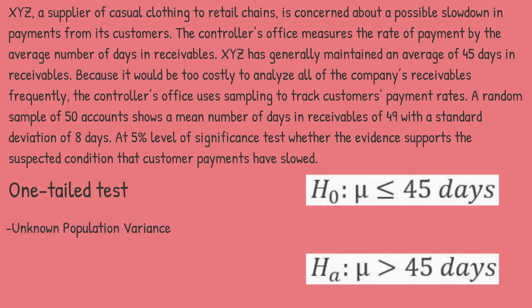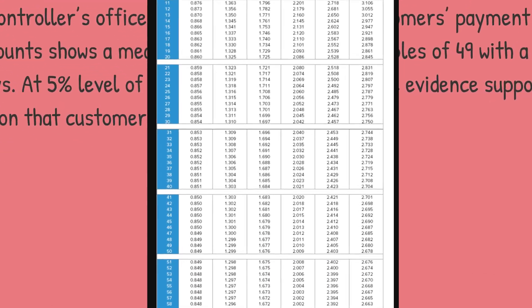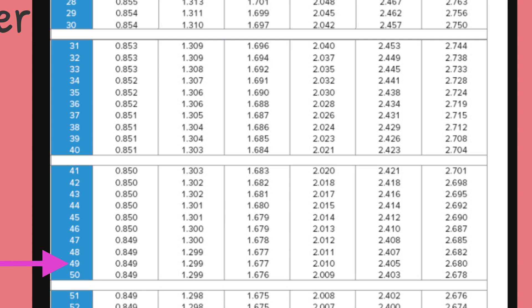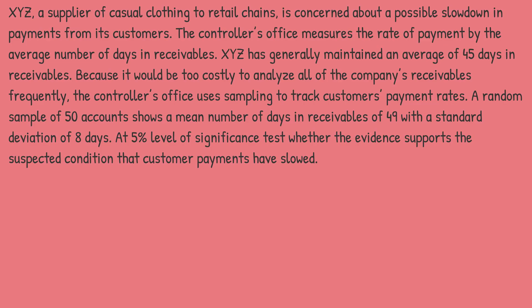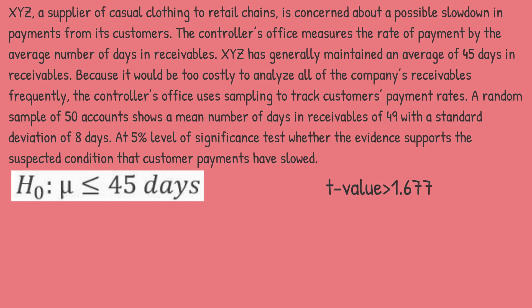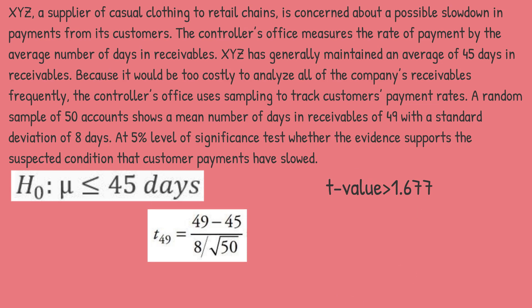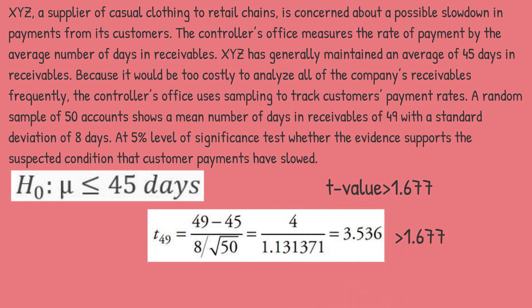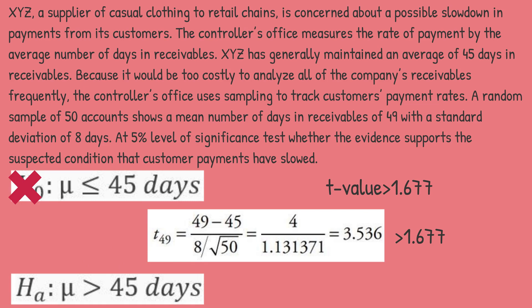Because the population variance is not known, we use a t-test with 50 minus 1, or 49 degrees of freedom. Looking across the row for 49 degrees of freedom to the 0.05 column for a one-tailed test, we find a rejection point of 1.677. We reject the null if t > 1.677. The t-value for 49 degrees of freedom equals the sample mean of 49 minus 45, divided by 8 over the square root of 50, giving a t-value of 3.536. Since 3.536 is greater than 1.677, we reject the null hypothesis at the 5% level of significance. We conclude that XYZ has experienced a slowdown in customer payments.